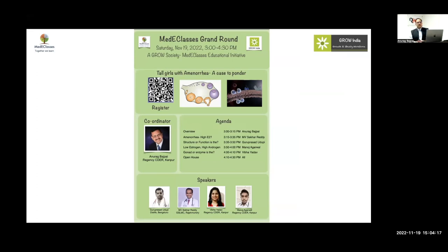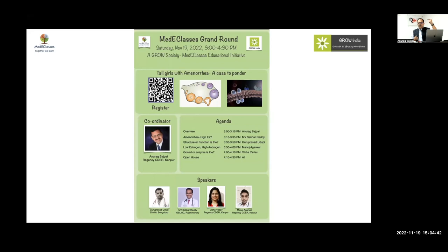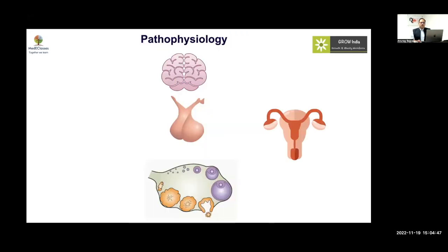The agenda for today covers four specific case scenarios: a girl with amenorrhea and high estrogen, a case with low estrogen and high androgen, issues regarding structural versus functional problems, and finally whether the gonad or the enzyme is defective. All four cases share primary amenorrhea in a relatively tall girl with hypergonadotropic hypogonadism.